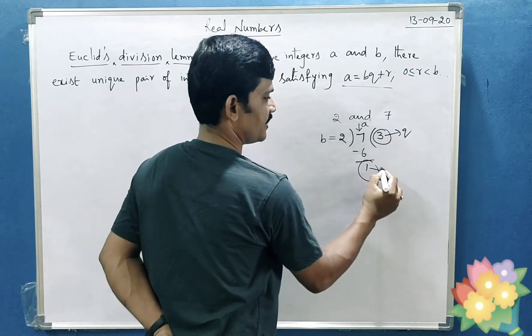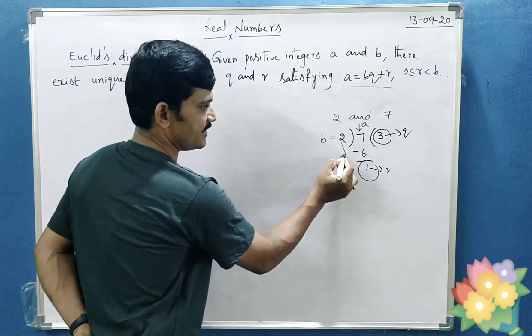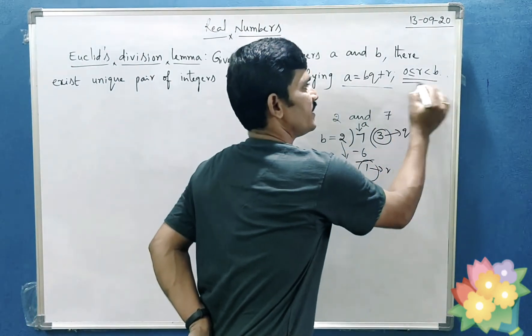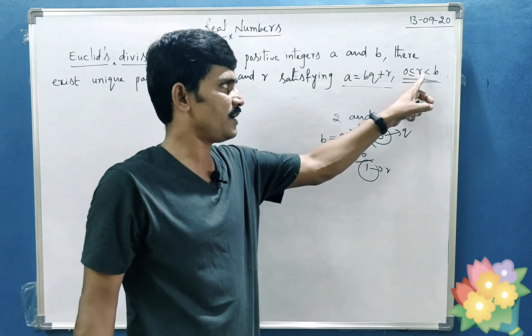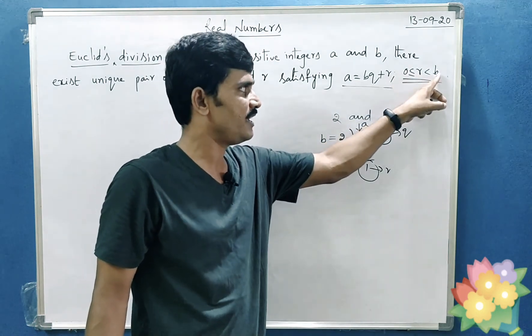Quotient and remainder such that this remainder is less than the divisor. So you have to satisfy this condition. Whether your remainder may be 0 or greater than 0 or less than the divisor.